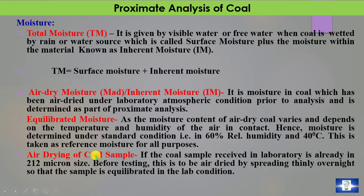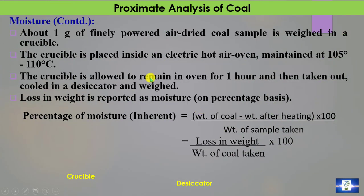Before proximate analysis, the sample must be prepared. The coal sample received in the laboratory is already in 212 micron size, and before testing it is air-dried by spreading thinly overnight so that the sample is equilibrated to laboratory conditions. For the proximate analysis, 1 gram of finely powdered air-dried coal sample is weighed in a crucible. This crucible is placed inside an electric hot air oven maintained at 105–110°C for one hour.